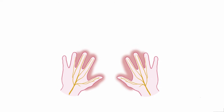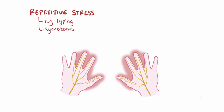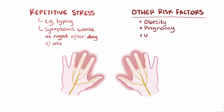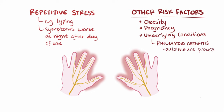Typically in carpal tunnel syndrome, both hands are affected because usually there's a repetitive stress injury like typing which causes inflammation in both wrists. This also explains why symptoms of carpal tunnel syndrome tend to be worse at night, after a day of use. Other risk factors include obesity or pregnancy, as well as having underlying conditions like rheumatoid arthritis, where joint inflammation from an autoimmune process leads to the compression of the median nerve.